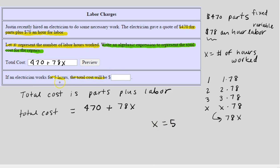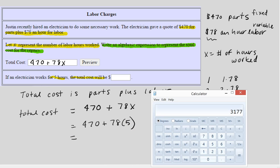X represents the number of hours worked, so we're given that X equals 5, and we're asked to evaluate the total cost. So I'm going to copy the expression, but I'm going to replace X with 5 in parentheses. And now I'm going to let the calculator do this computation.